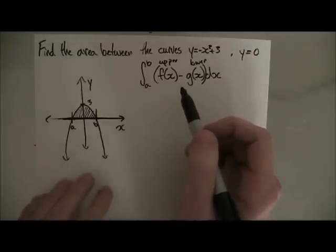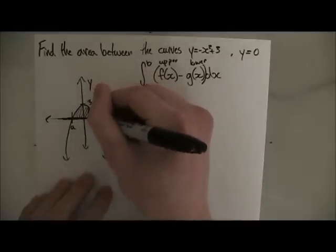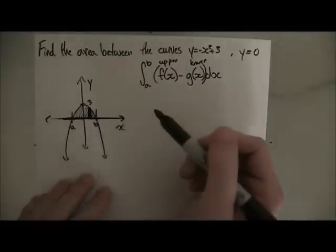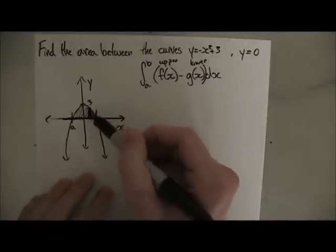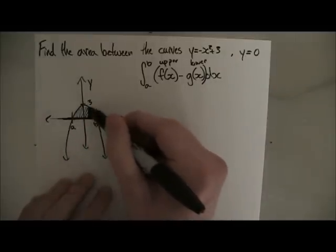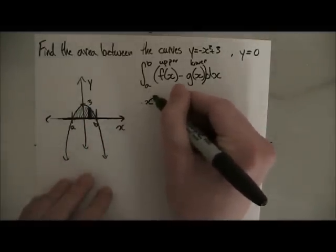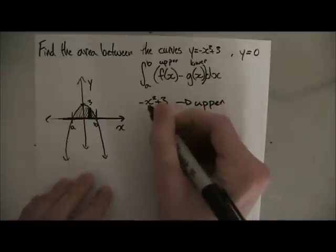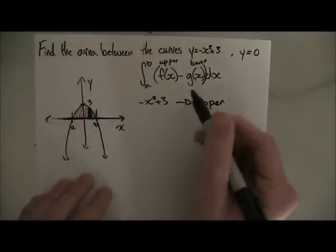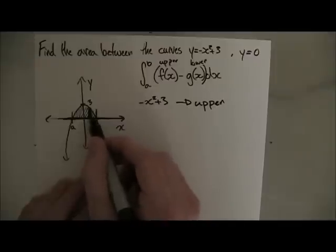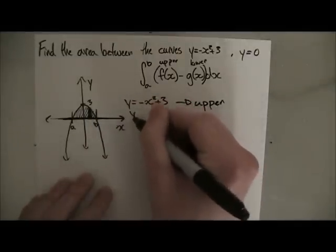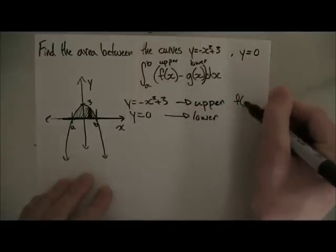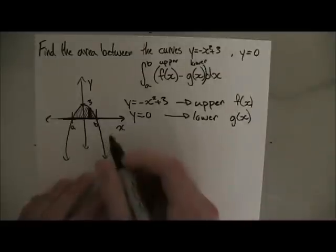If we draw a rectangle like we did in the last video, it doesn't really matter where it goes. We ask ourselves what function is touching the upper part of our rectangle. The parabola touches the top, so minus x squared plus three is our upper function. And y equals zero touches the bottom of our rectangle, so y equals zero is our lower function g of x.